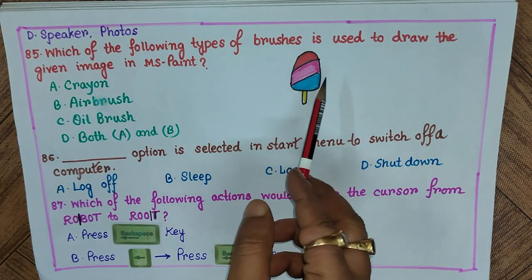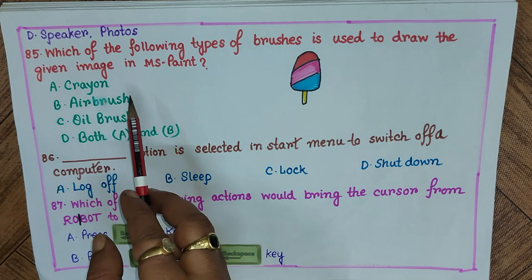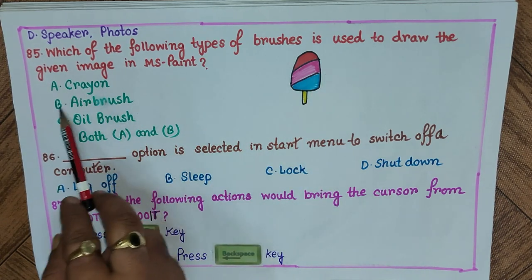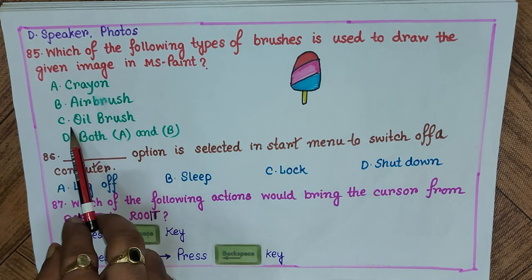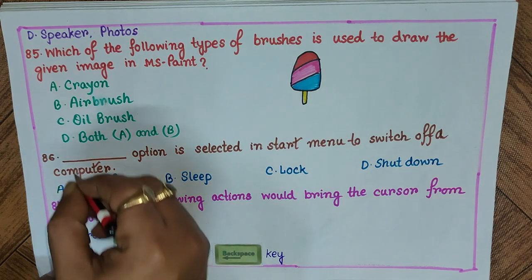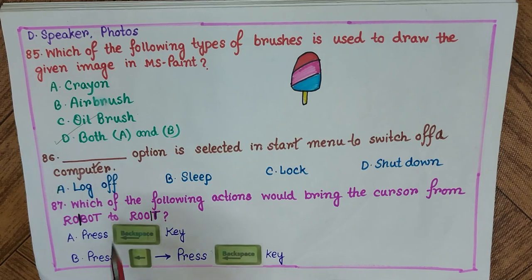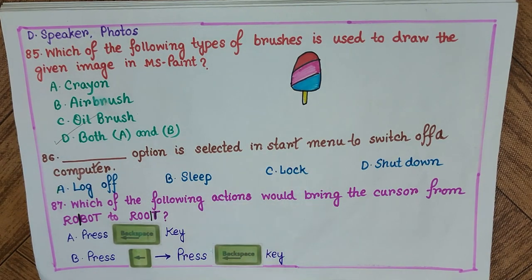Question 85: Which type of brush is used to draw the given image in MS Paint? A) crayon, B) airbrush, C) oil brush, D) both A and B. The answer is D) both A and B. Question 86: Which option is selected in the start menu to switch off a computer? A) log off, B) sleep, C) lock, D) shutdown. The answer is D) shutdown.